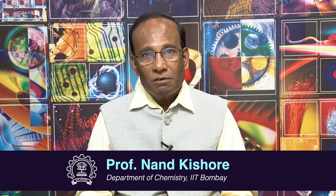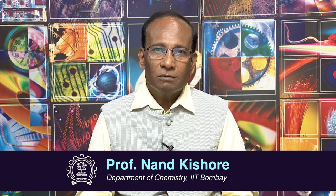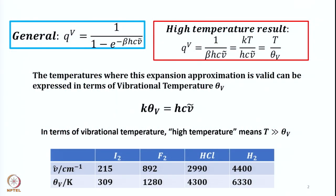In the previous lecture, we derived certain relations. The only approximation we made in the discussion of vibrational partition function is that we treated the vibrator as a harmonic oscillator with an assumption that not too many vibrational states are occupied. Even in that case, when we treated it as a uniform ladder of energy levels, we derived a general expression for the vibrational partition function: qv = 1 / (1 − exp(−βhcν̄)).